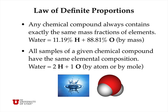The law of definite proportions says that any chemical compound always contains exactly the same mass fractions of elements. So for water, for example, all samples of water contain 11.19% hydrogen by mass and 88.81% oxygen by mass. It doesn't matter whether you have a drop or an ocean — it's always 11.2% and 88.8%. These numbers are what they are because the mass of each hydrogen atom is about 16 times less than the mass of each oxygen atom.